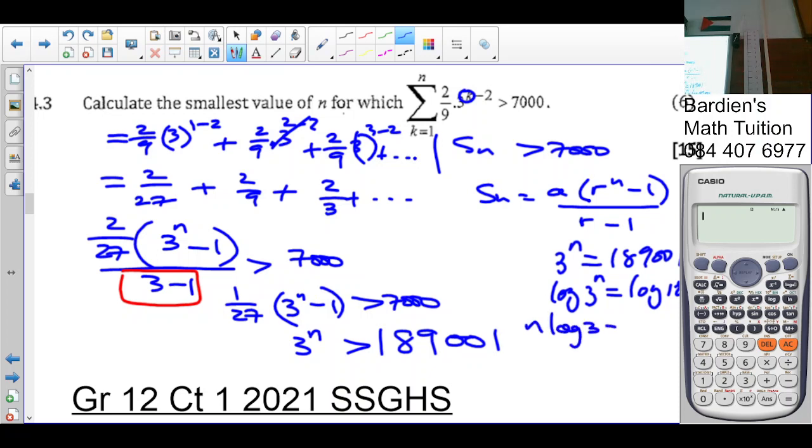So I divide by log 3 both sides. So I'm going to say fraction log 189,001 over log 3. Have you guys been exposed to logs already? No? So it's 11.0500...